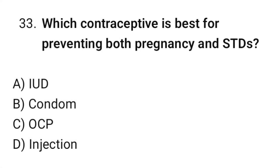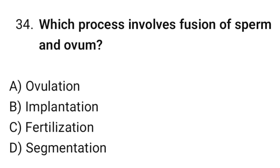Question No. 33: Which contraceptive is best for preventing both pregnancy and STDs? The correct option is B. Condom. Question No. 34: Which process involves fusion of sperm and ovum? The correct option is C. Fertilization.